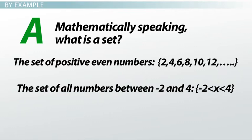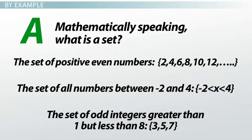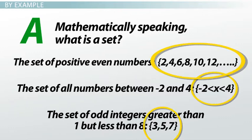The set of all numbers between negative 2 and 4: open bracket, negative 2 is less than x, which is less than 4, close bracket. And the set of odd integers greater than 1 but less than 8, which includes 3, 5, and 7. By seeing these examples, it is clear that a set is a group of items, normally numbers in math, that comply with a pre-stated condition for inclusion.